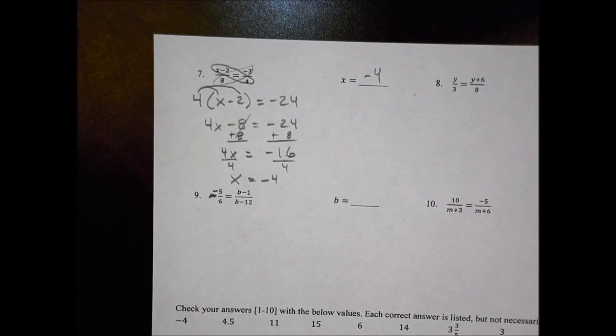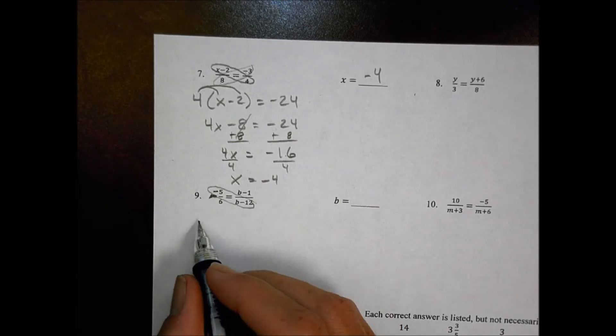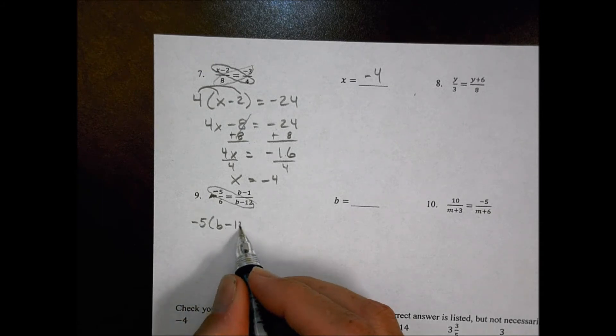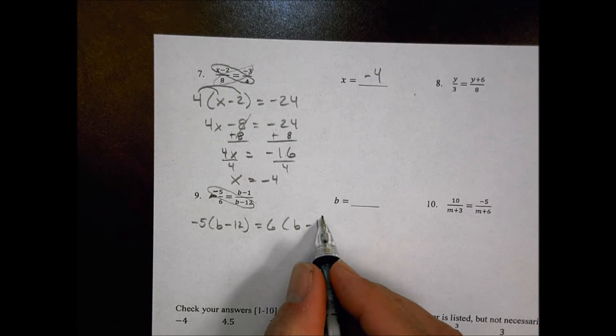And so as I think that through just a little bit here, I'm going to go ahead and say, let's put the negative with the 5, and we'll keep the 6 positive. So I'm going to then cross multiply this to have negative 5 times b minus 12, and set that equal to 6 times b minus 1.